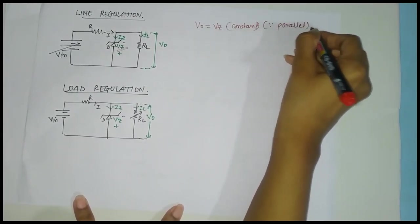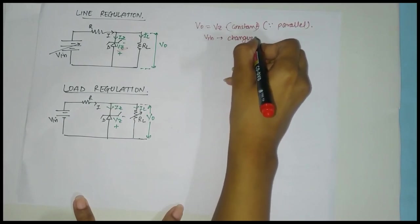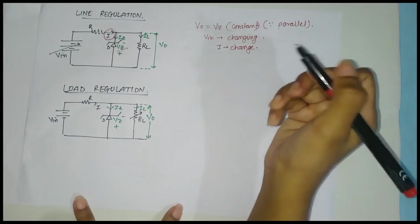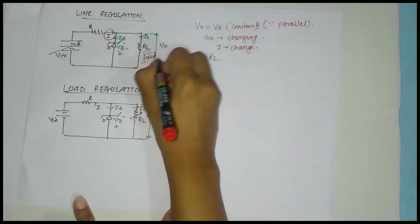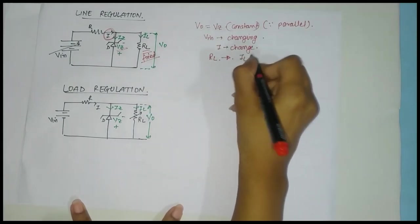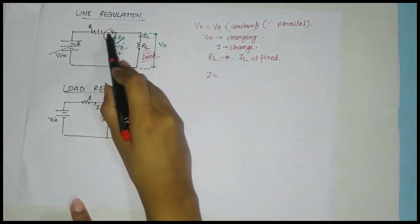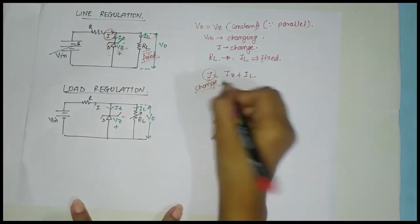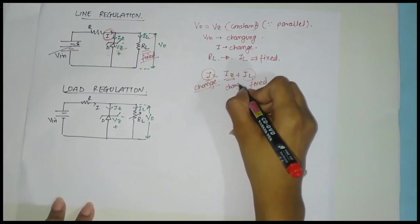Now, as the input voltage changes, VZ is changing — it is not constant. Therefore the current I flowing through the circuit will also change due to the change in input voltage. But the load resistance is fixed, so the current through it, IL, will be fixed — it will be a particular constant. Using Kirchhoff's current law: I equals IZ plus IL. Since I is changing but IL is fixed, IZ must also be changing to compensate.